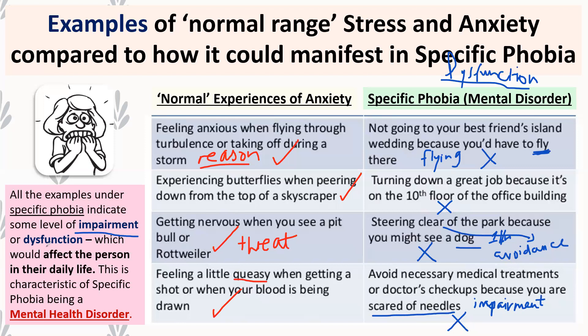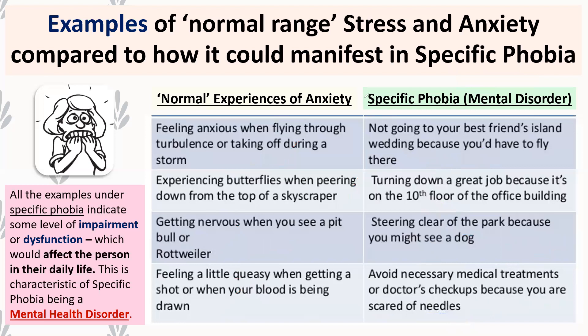In all of those specific phobia examples, the person shows some level of impairment or dysfunction — their anxiety affects their ability to attend events, get a job, see friends, or even look after their well-being. This dysfunction is a really important characteristic of specific phobia and any mental disorder. In exam scenarios, spotting these levels of dysfunction indicates the person is likely experiencing specific phobia.